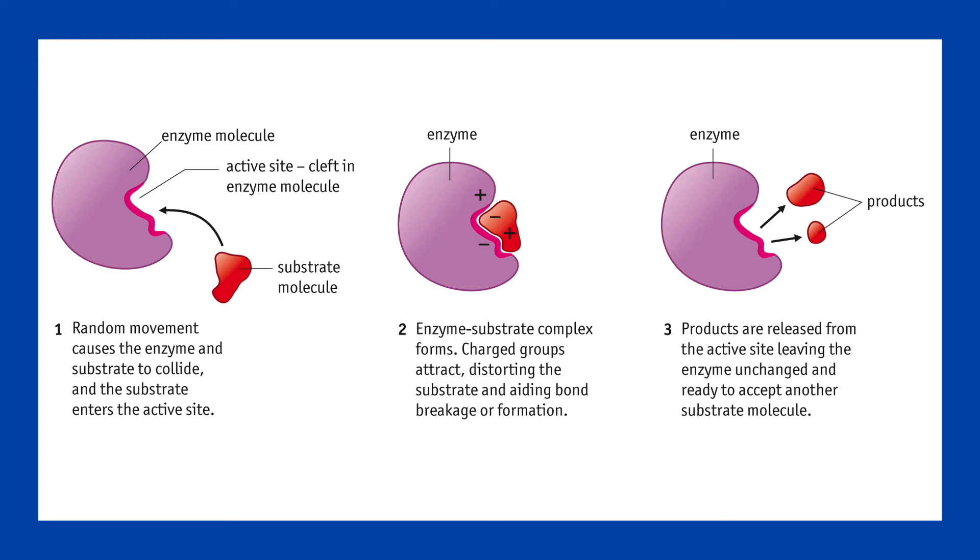Enzymes catalyze many different types of reactions, some occurring inside cells and others in extracellular tissue fluid or blood. Catabolic reactions are those in which enzymes break down a large substrate molecule into smaller ones, whereas anabolic reactions are those that combine smaller substrates to form a larger one.